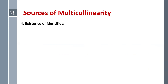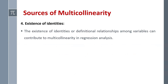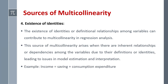The fourth source is the existence of identities. Definitional relationships among variables can contribute to multi-collinearity. For example: Income = Saving + Consumption Expenditure. This is a definitional relationship where income is bifurcated into saving and consumption expenditure. If you include both of these variables in a regression model, you will have the problem of multi-collinearity.